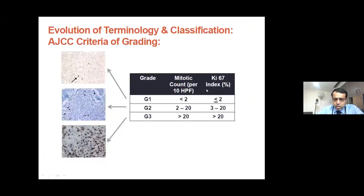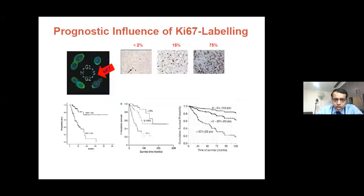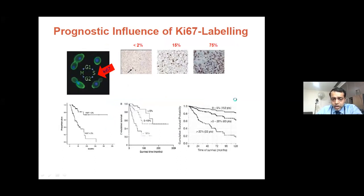To summarise the classification: Ki67 ≤2% is grade 1, 3–20% is grade 2, and >20% is grade 3. Mitotic count per 10 high-power fields: <2 is grade 1, 2–20 is grade 2, >20 is grade 3. This is important because grading decides survival — as seen in Kaplan-Meier curves, grade 1 has the best survival, followed by grade 2, and grade 3 has really poor survival. Ki67 is a key deciding factor: 0–5% had better survival, 5–20% lesser, and >20% the worst.